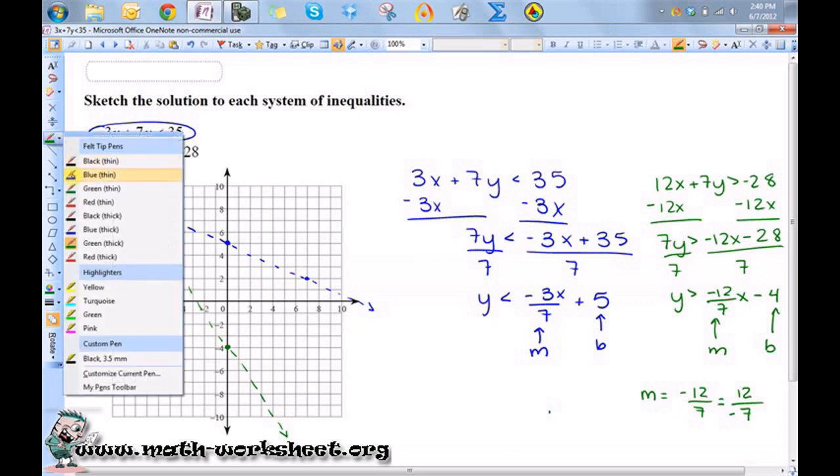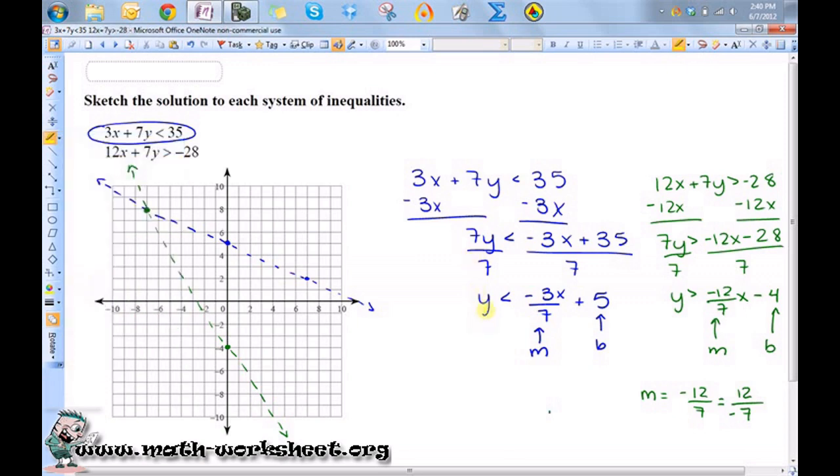So the other reason why it's important to have it in slope-intercept form is you can kind of tell more easily which area needs to be shaded. This is saying all the y's that are less than this. So we're looking for all of the area below this line that is blue.